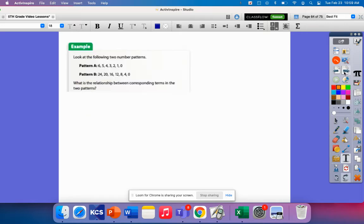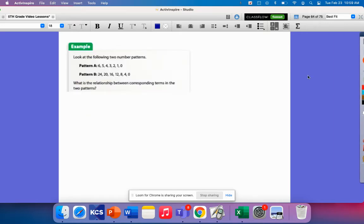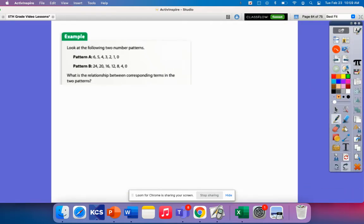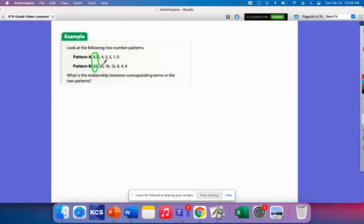Let's look at another pattern problem. So this one says, just look at the following two number patterns. What is the relationship between the corresponding terms in the two patterns? So here is pattern. Here's pattern A. So we have 6 and 24. Let's make these ordered pairs down here. I think that that would be helpful. I will chart here. I am going to say that pattern A would be X and pattern B is going to be Y. So we'll have X and Y.